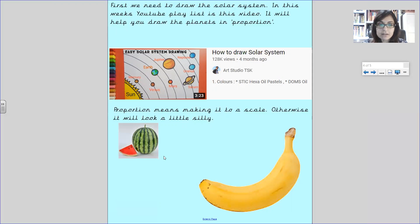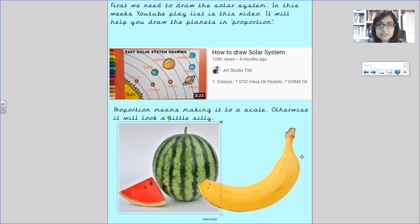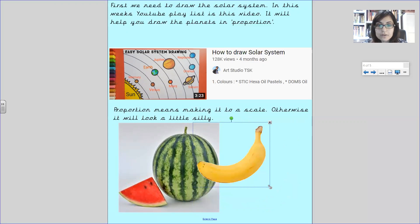The watermelon is larger, so you would draw your watermelon at a larger scale and your banana would be smaller. Okay, so that means in proportion, thinking about the sizes in relation to each other.